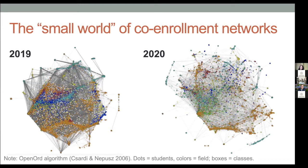Here are two networks of students taking face-to-face classes at Cornell's Ithaca campus. In fall 2019, that was virtually all students — maybe three or four distance learning classes. By 2020, only about 50% of students are taking an in-person class. Part of that is because students didn't return to Ithaca, but also there are another 4,000 to 5,000 students living in Ithaca who are not taking in-person classes. Every dot you see is a student — roughly 22,000 in 2019, and 11,674 in 2020.